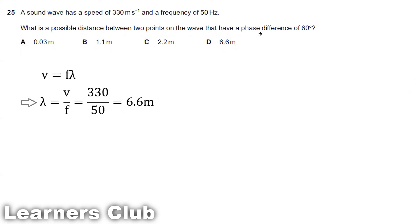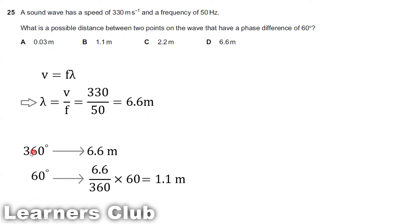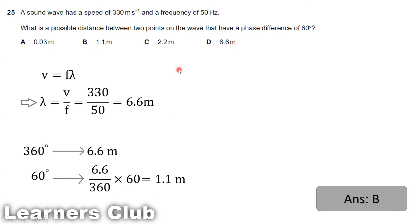Wavelength is the distance traveled by one complete oscillation — that is, 360 degrees or 2π radians. So for 360 degrees the distance is 6.6 meters. For 60 degrees, the distance is (60/360) × 6.6 = 1.1 meters. Therefore the answer is option B, 1.1 meters.